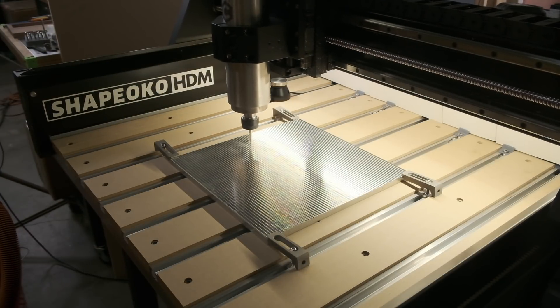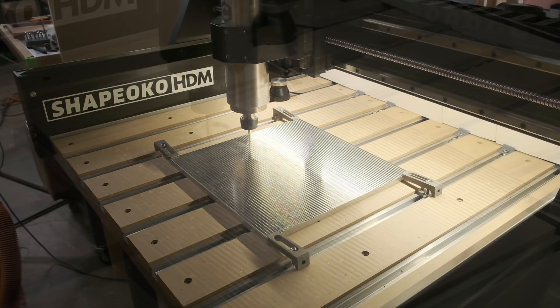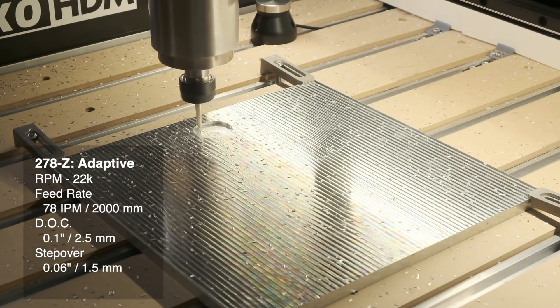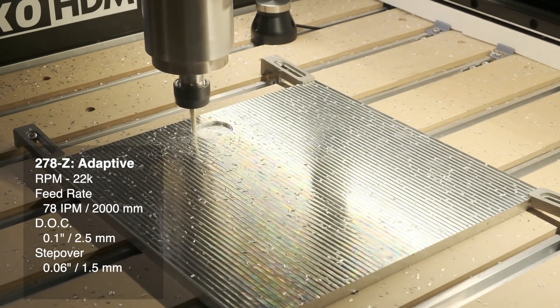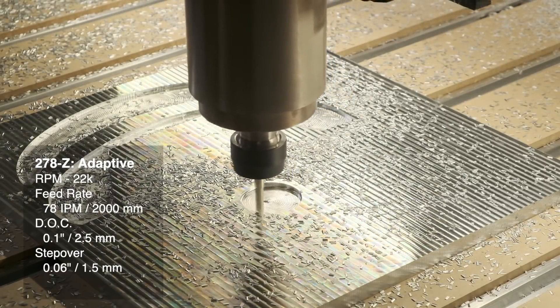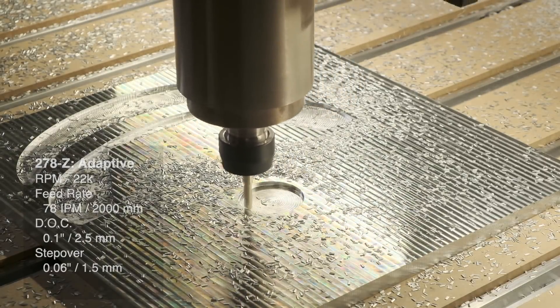Here are my speeds and feeds for this adaptive toolpath. 22,000 RPM, 2,000 millimeters per minute feed rate, 1.5 millimeter optimal load, and a 2.5 millimeter depth of cut.